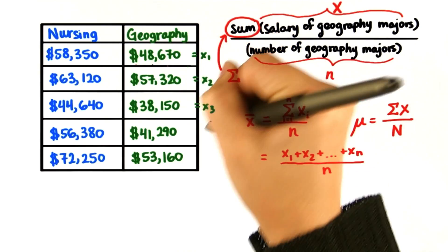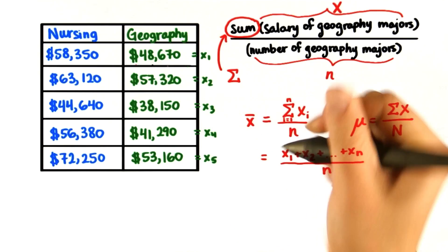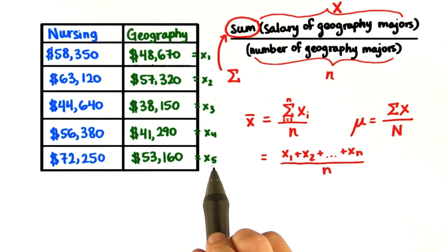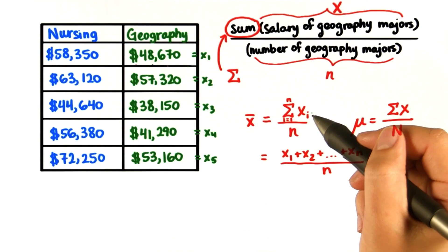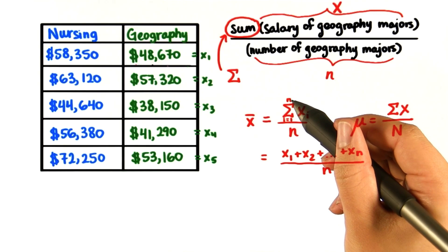X3, x4, and x5. And n is 5. So this is telling us that we sum everything from x1 all the way to xn.